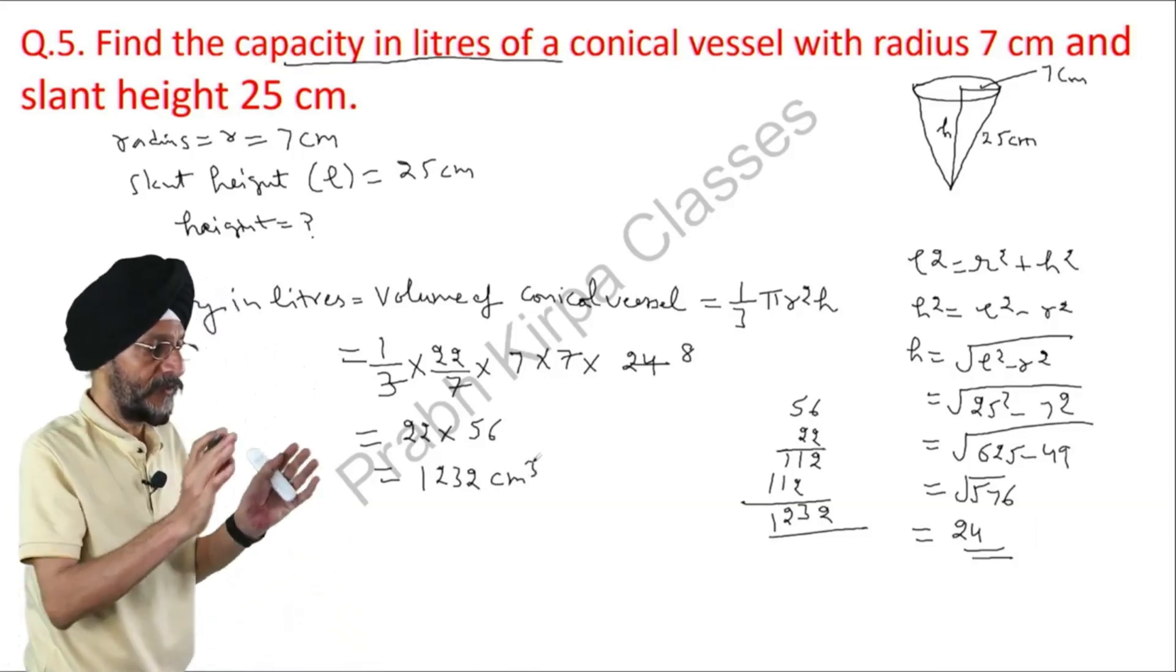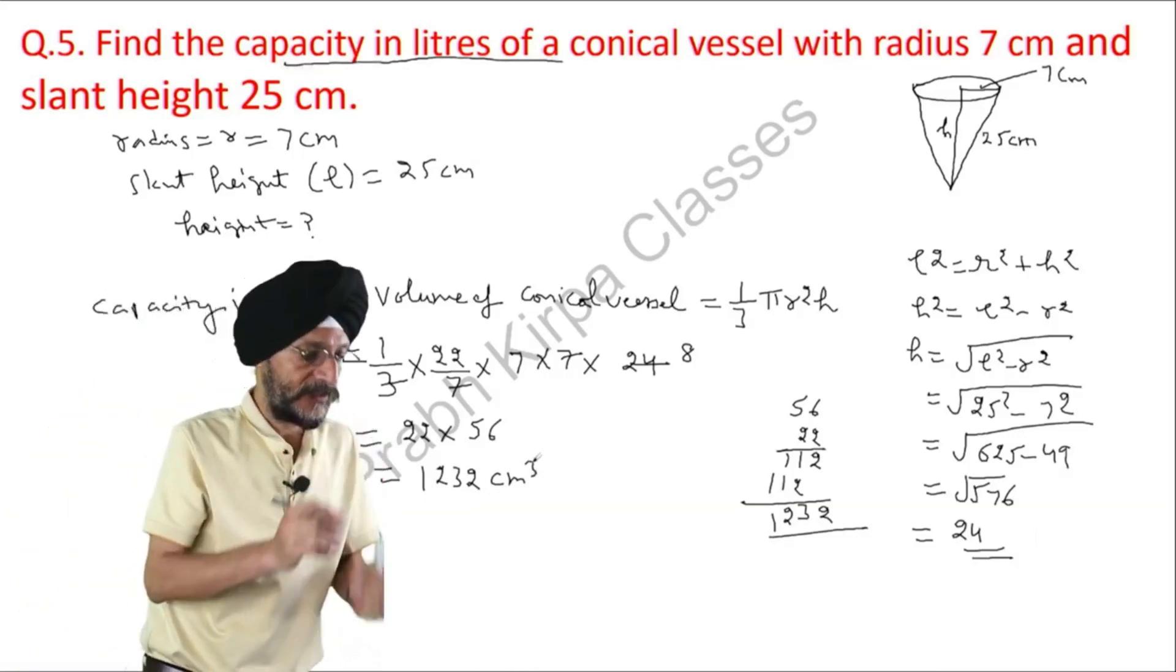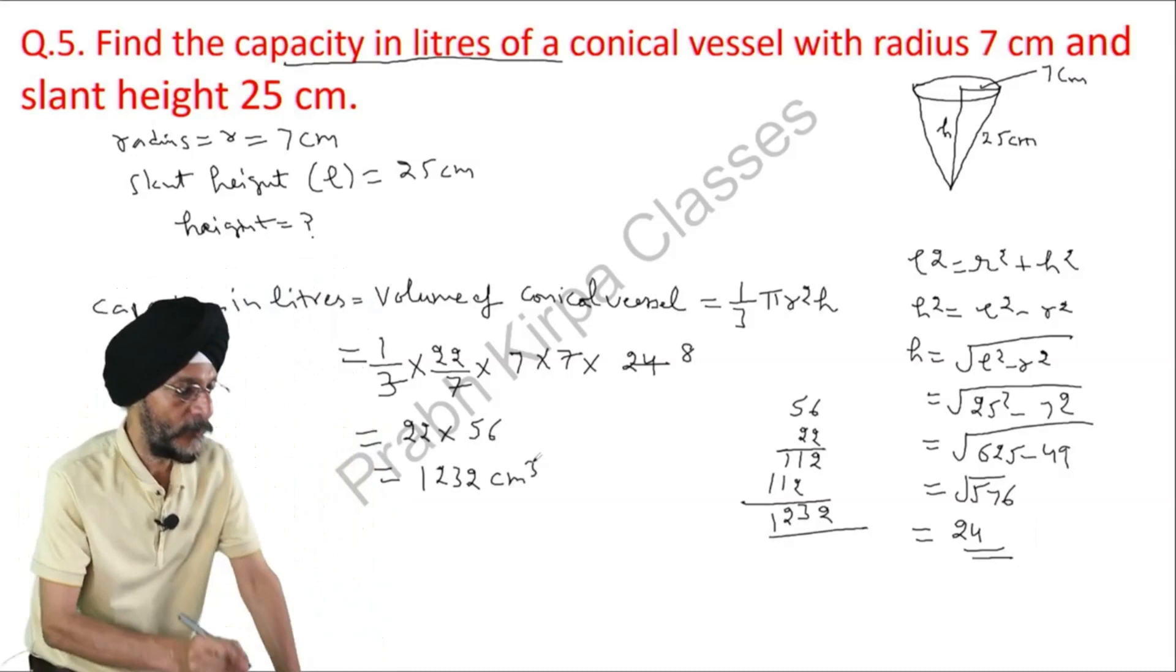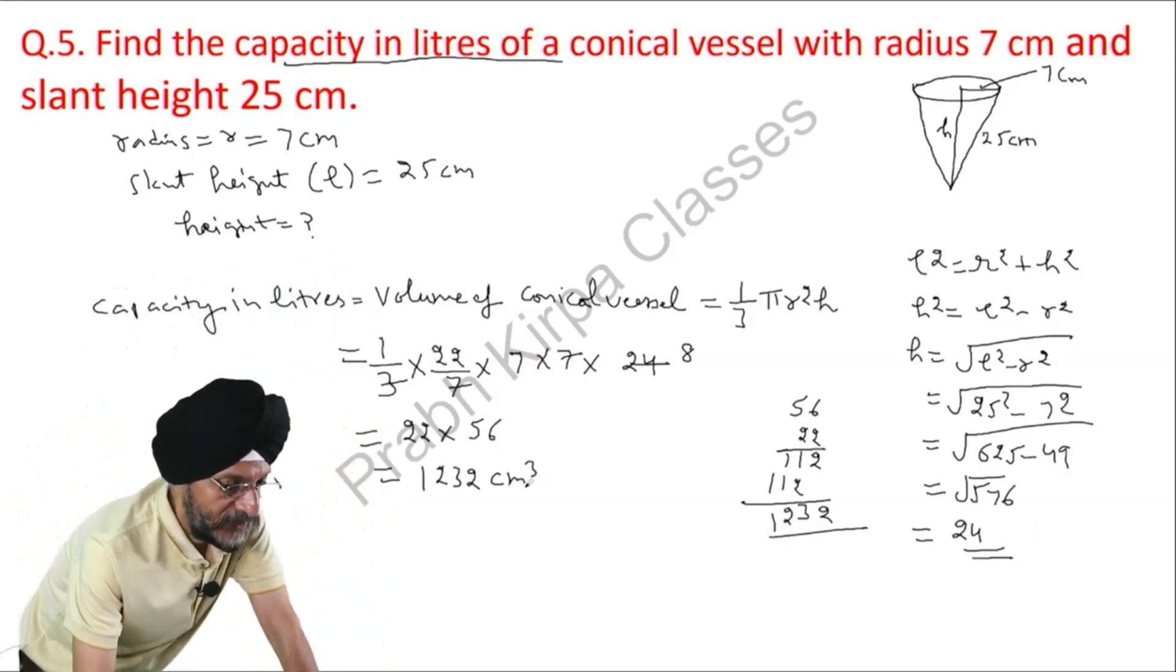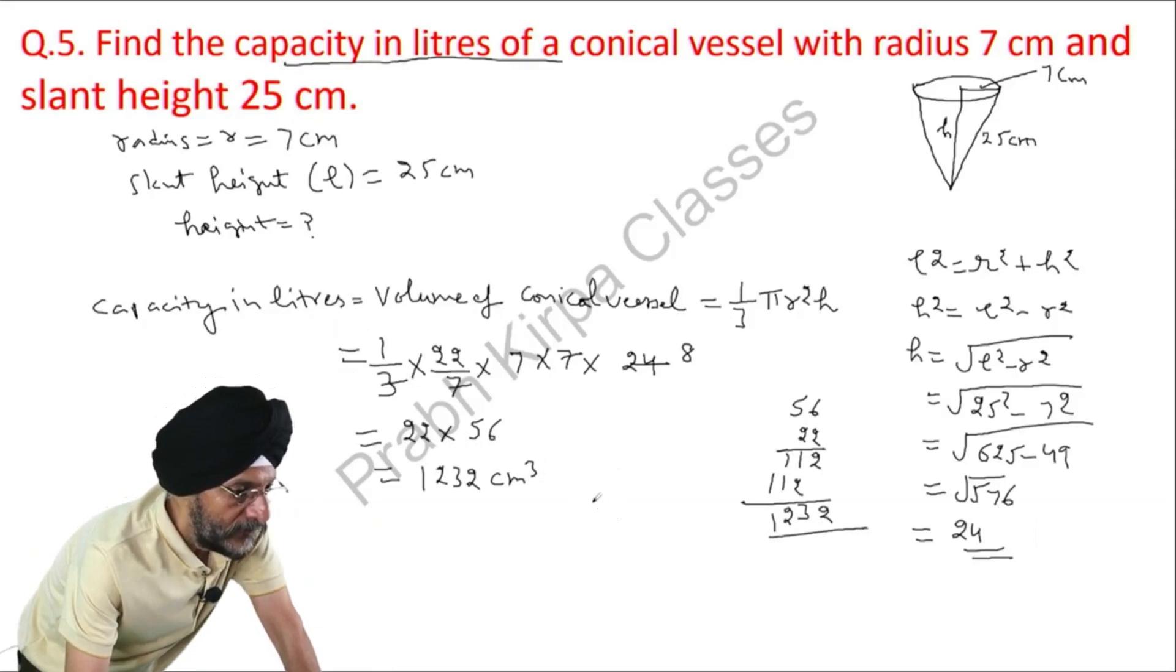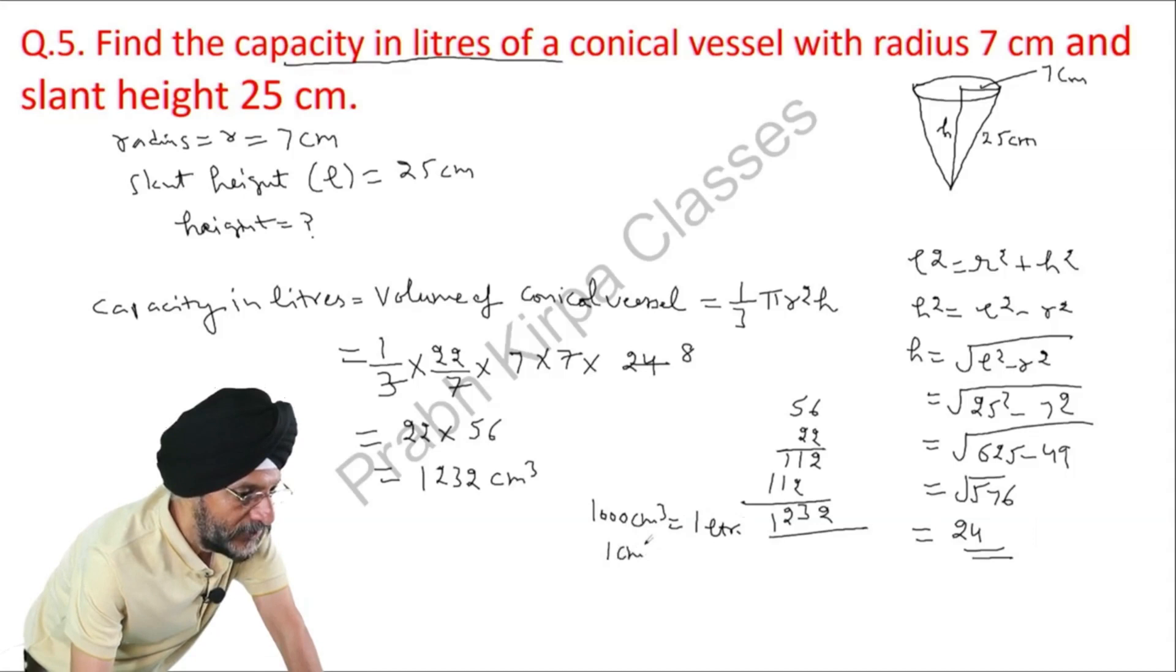Now, we have to find the capacity in liters. What we have found here is cubic centimeter. We know that 1000 cubic centimeter is equal to 1 liter, and 1 cubic centimeter is equal to 1 over 1000 liters.